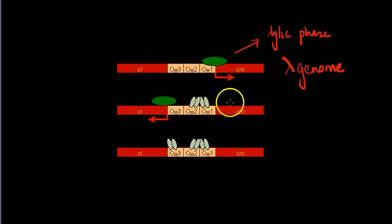In the second instance, when there is CI repressor protein present, it is going to bind itself to the OR1 and OR2 operator domains.